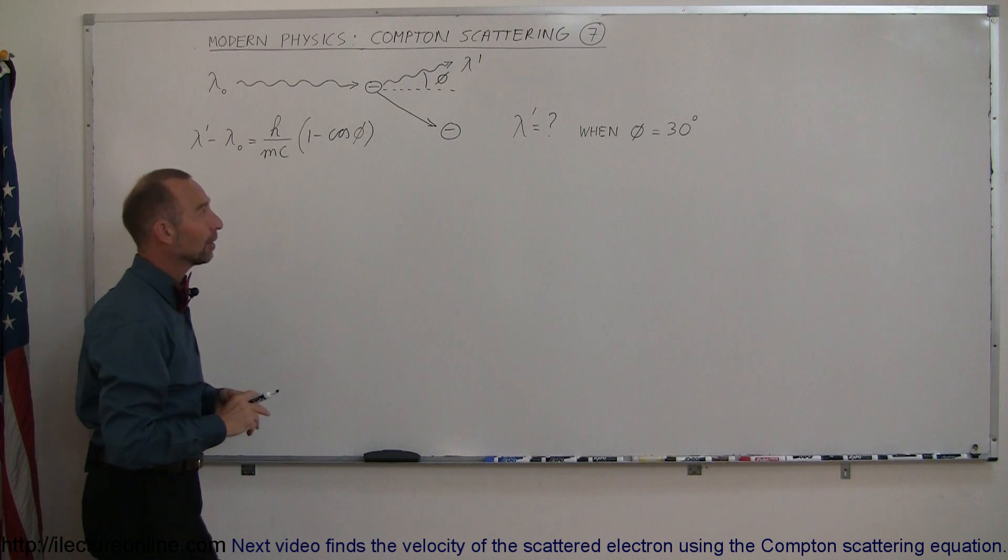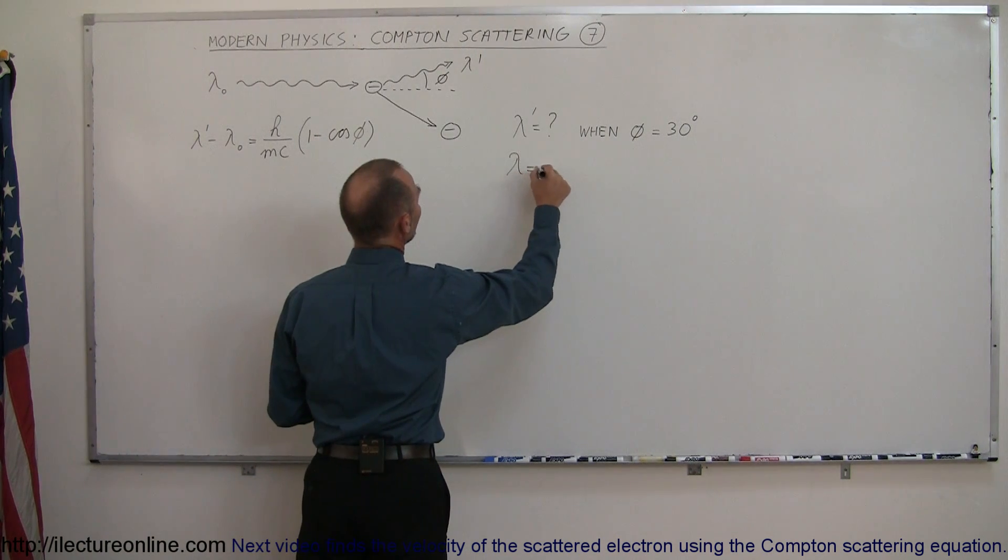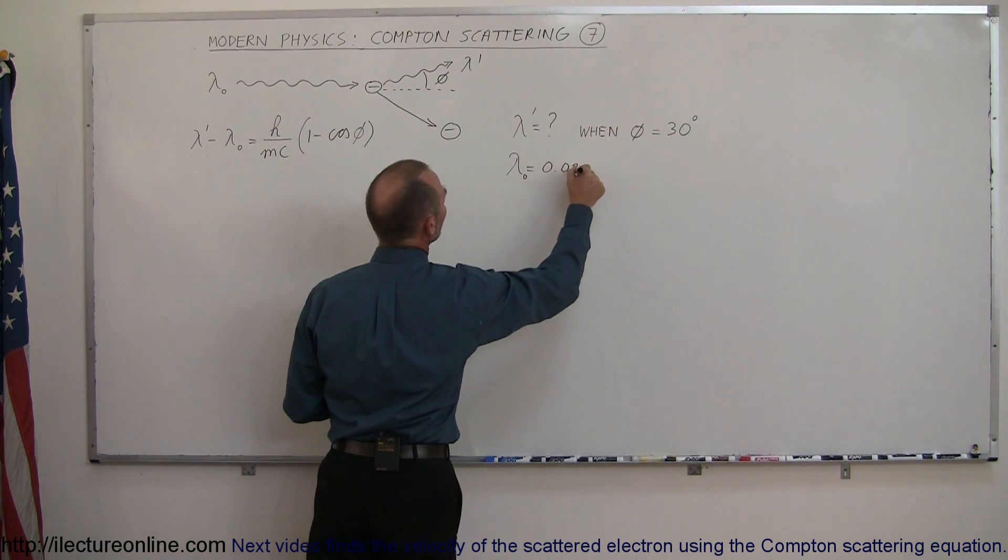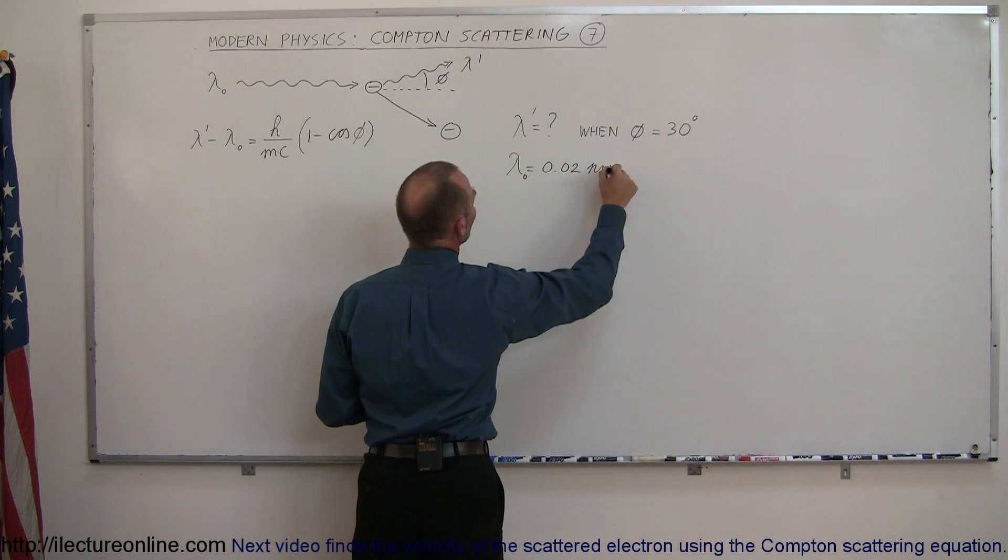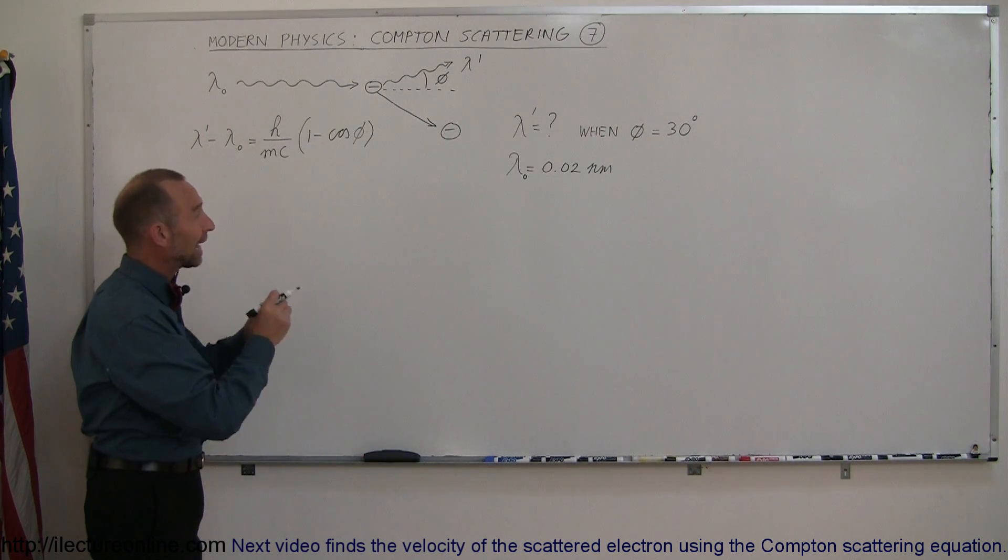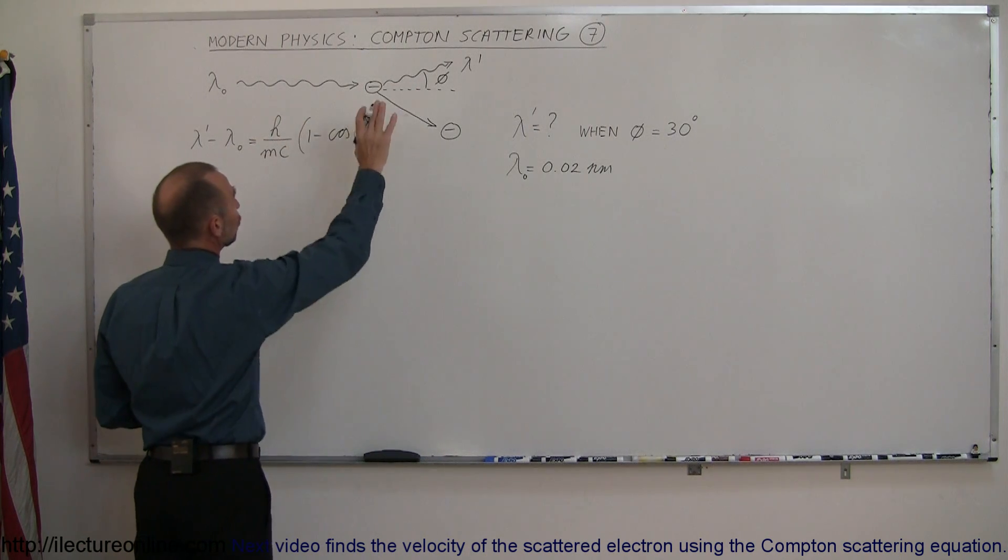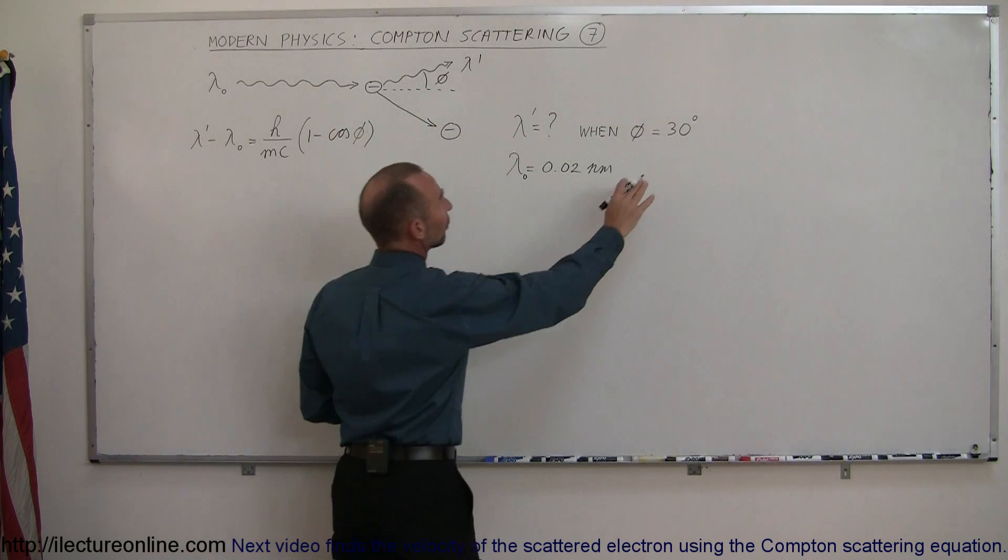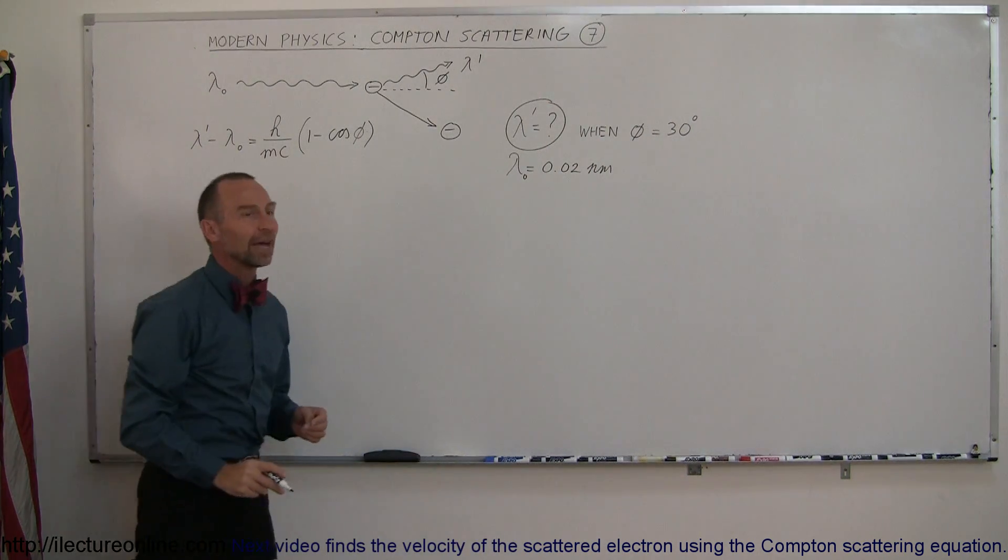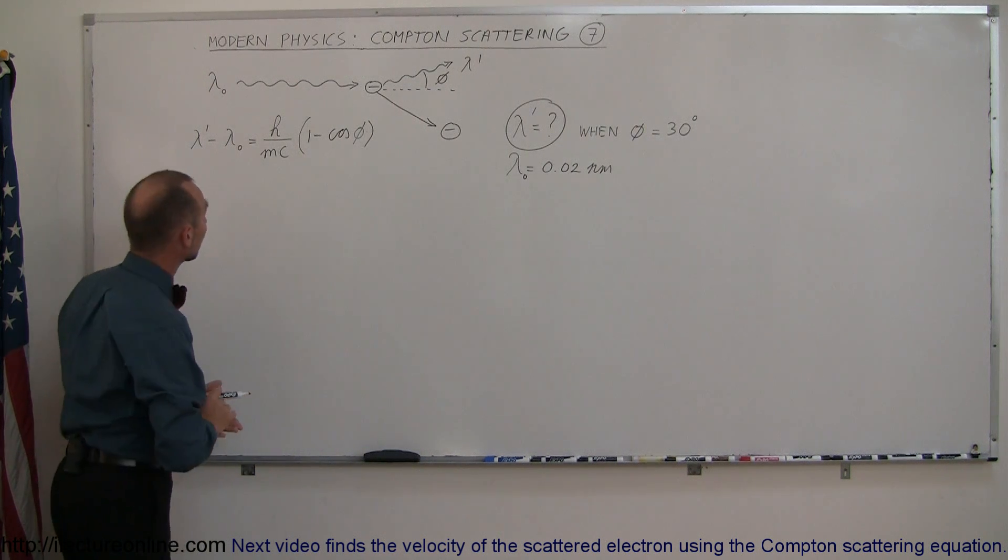Let's say we have a photon with an original wavelength of 0.02 nanometers. That's a very short wavelength in the range of x-rays. So we have an x-ray photon that hits an electron and scatters off at an angle of 30 degrees. What is the final wavelength of that particular photon? How do we do that?